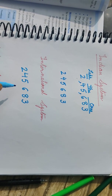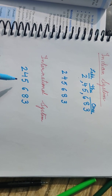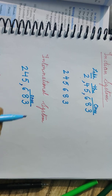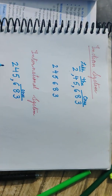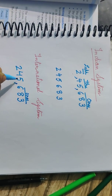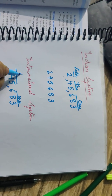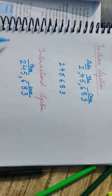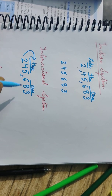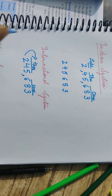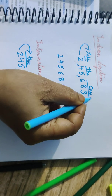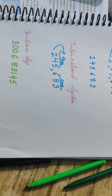The numbers are the same — 245683 — but see how commas differ in the International system. In the Indian system, the thousands period has only two places, but in the International system, the thousands period has three places. So in International: ones period gets 683, then thousands period gets all three digits — 245. We read: two hundred forty-five thousand, six hundred eighty-three.